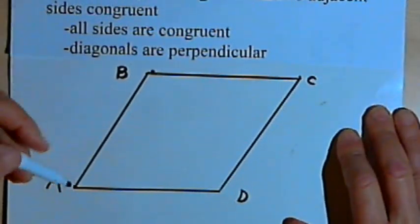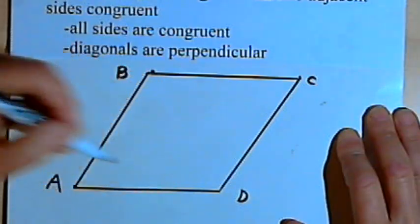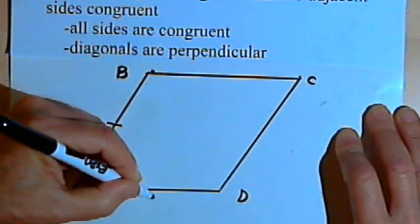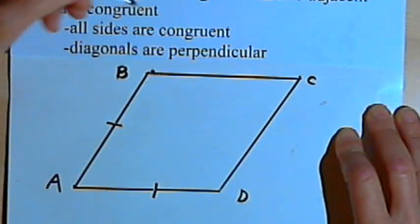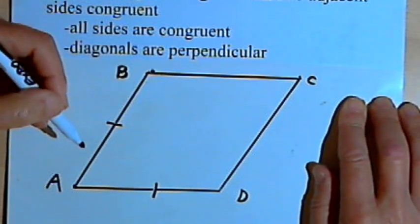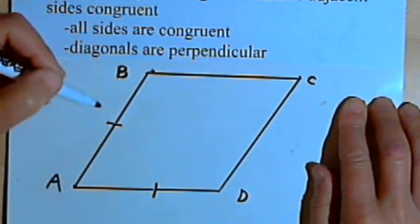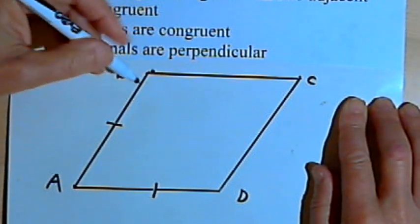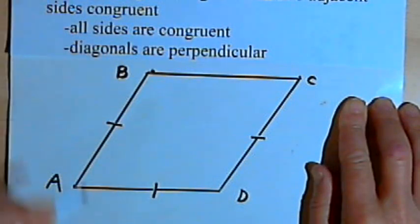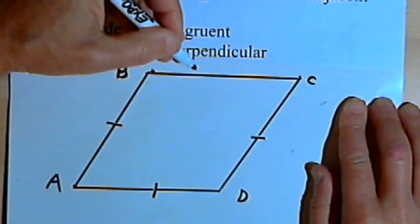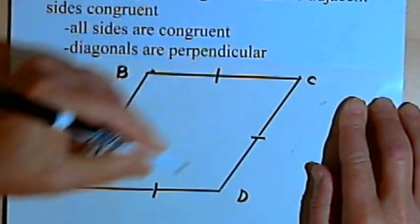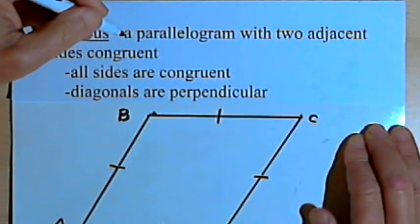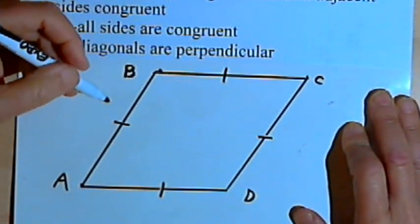Here's what that means. If I've got parallelogram ABCD, then two of the adjacent sides — let's say side AB and side AD — will be congruent; they'll be the same length. We also know that in any parallelogram the opposite sides are congruent. So since this is a parallelogram as well as a rhombus, side AB is congruent with side CD, and side AD is congruent with its opposite side BC. So that means all of the sides are congruent. Very often people just say a rhombus is a parallelogram with four equal sides.